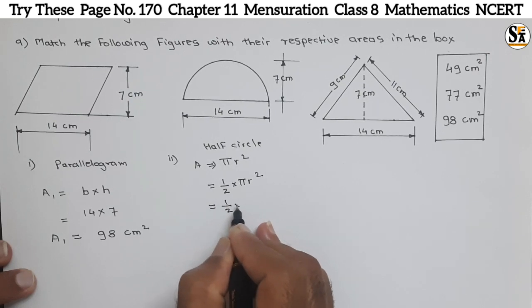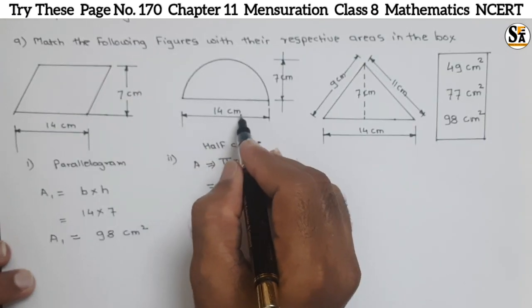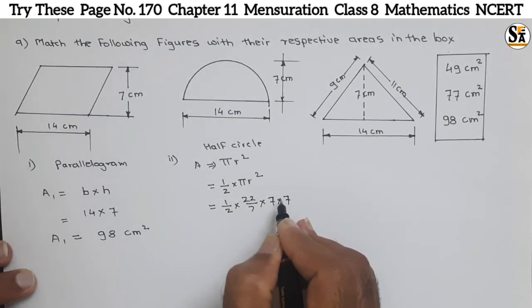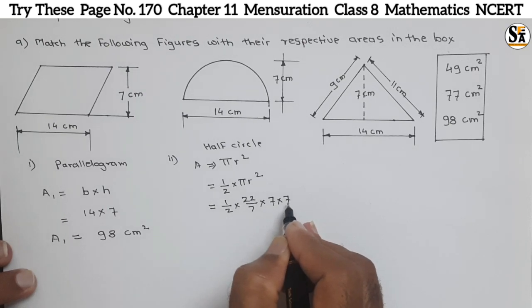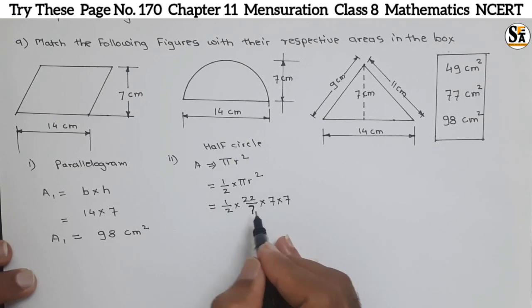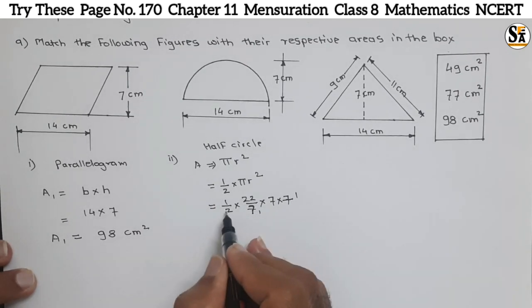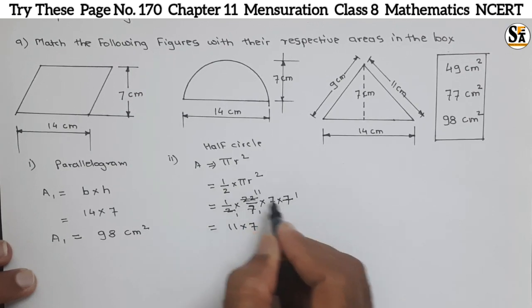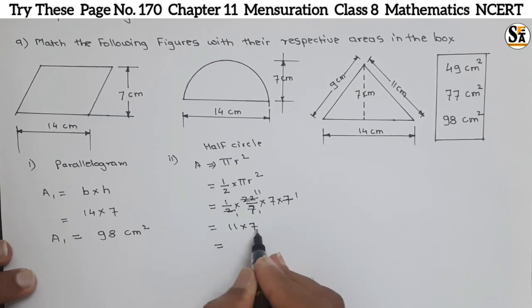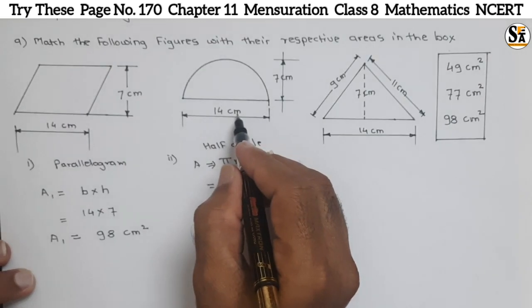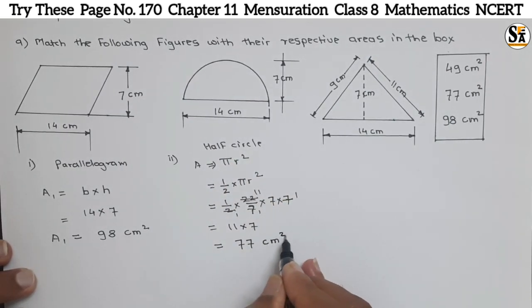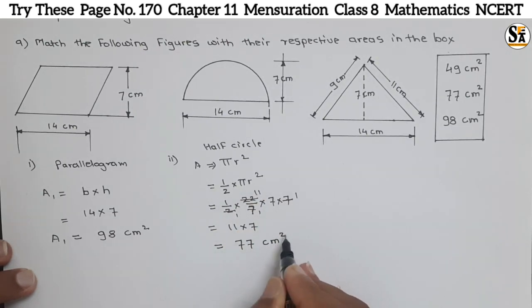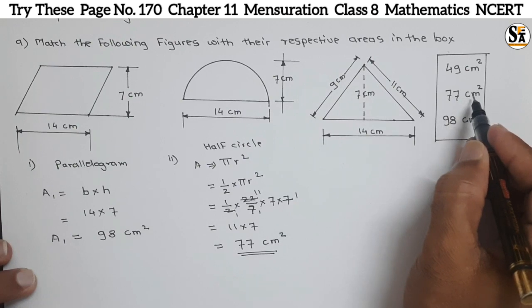Now putting in the values: π = 22/7, and since the diameter is 14 centimeters, the radius r = 7 centimeters. So the area = ½ × (22/7) × 7 × 7. We cancel one 7 from the denominator with one 7, leaving ½ × 22 × 7. Then 22 ÷ 2 = 11, so we get 11 × 7 = 77. The unit is centimeter square, so A2 = 77 centimeter square, which matches the option in the box.